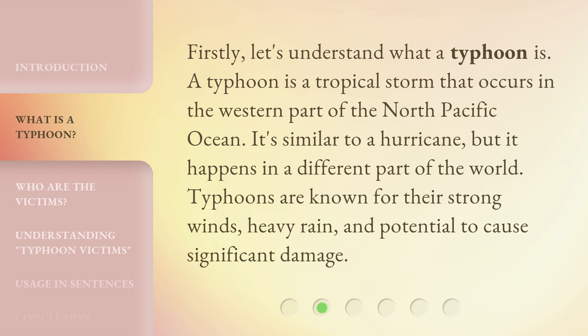Firstly, let's understand what a typhoon is. A typhoon is a tropical storm that occurs in the western part of the North Pacific Ocean. It's similar to a hurricane, but it happens in a different part of the world. Typhoons are known for their strong winds, heavy rain, and potential to cause significant damage.